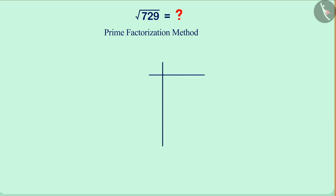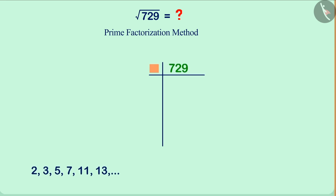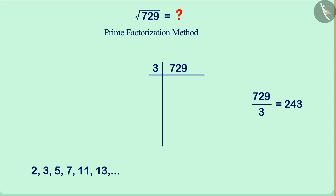For this, we will draw a figure similar to the one on the screen. In the second column of the top row, we will write the number that we wish to factorize. Now let's get started! Find the smallest prime number that divides 729 completely. That is 3. Write 3 in the first column of the first line.